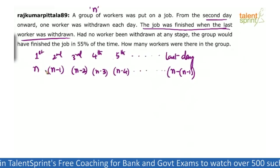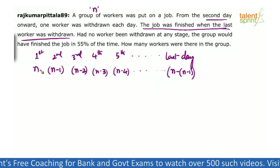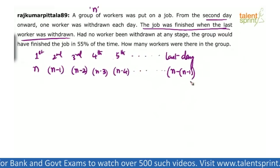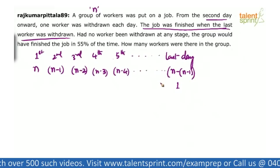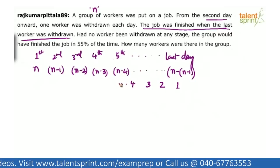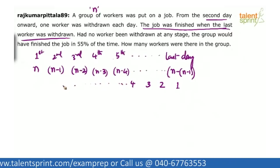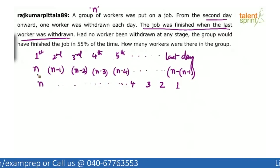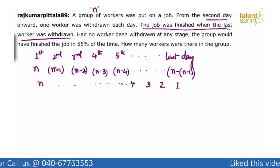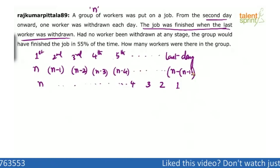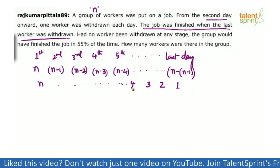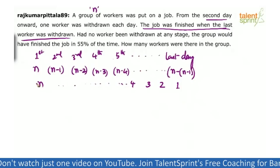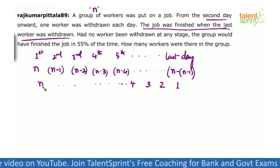Let us go in reverse direction. On the last day, one worker was working. On the last but one day, two workers. Then three workers, four workers, and so on — going up to n workers on the first day. So on the last day there is 1 person, the previous day 2 persons, the day before that 3, and so on up to n persons on the first day.